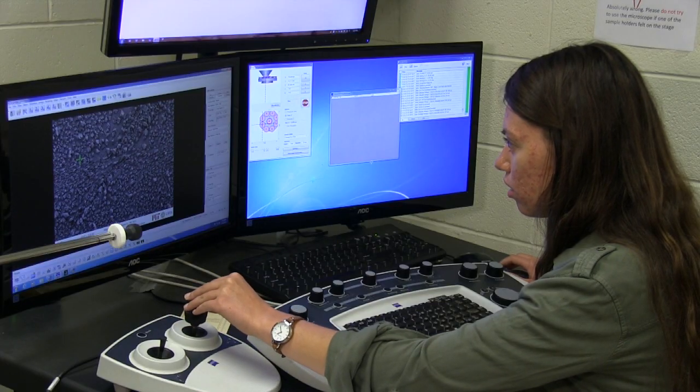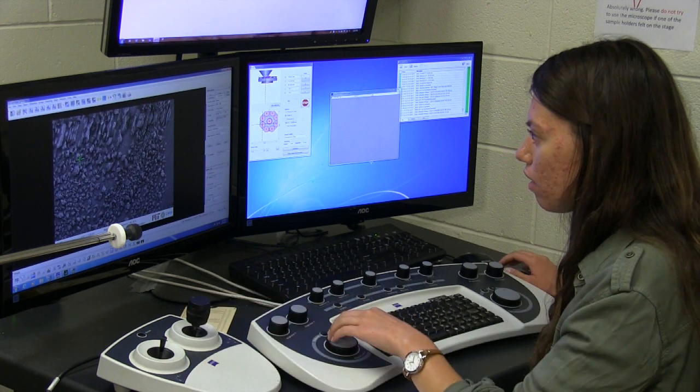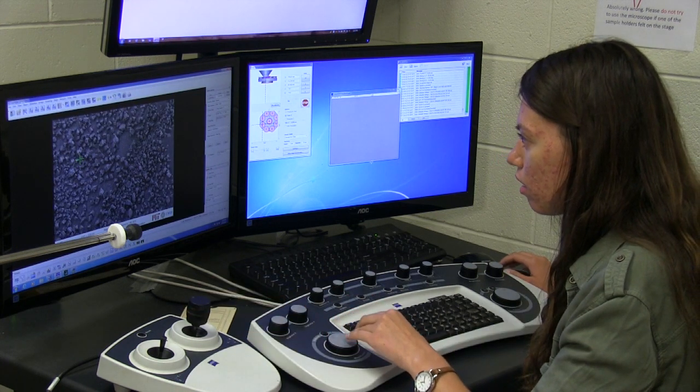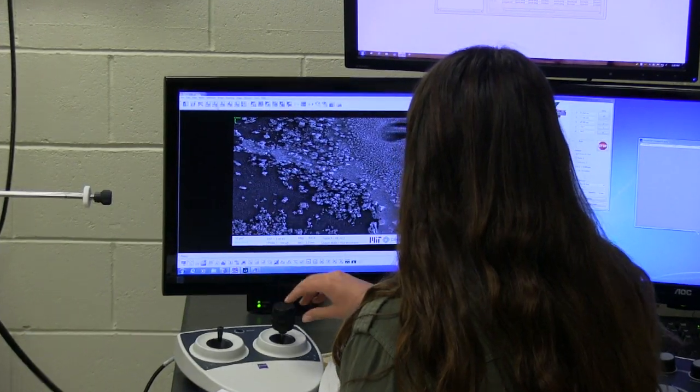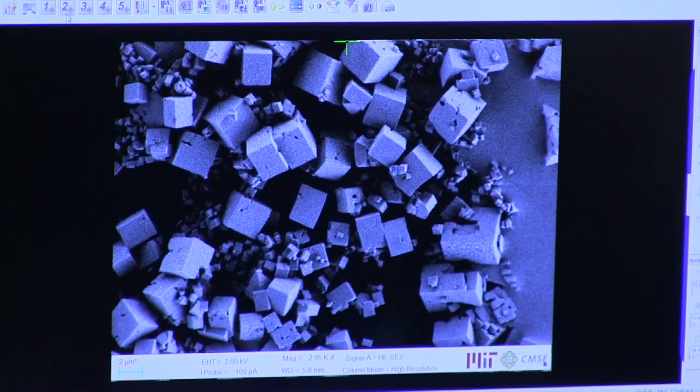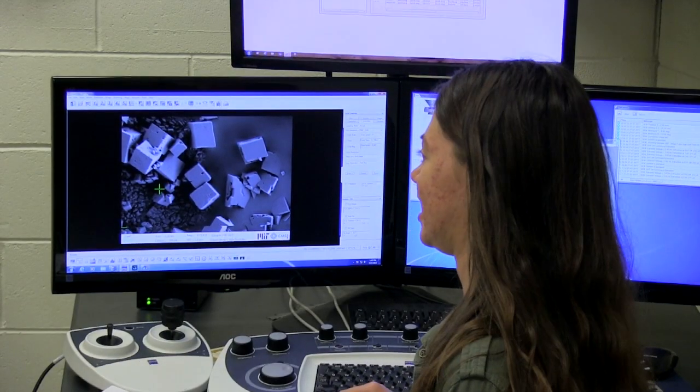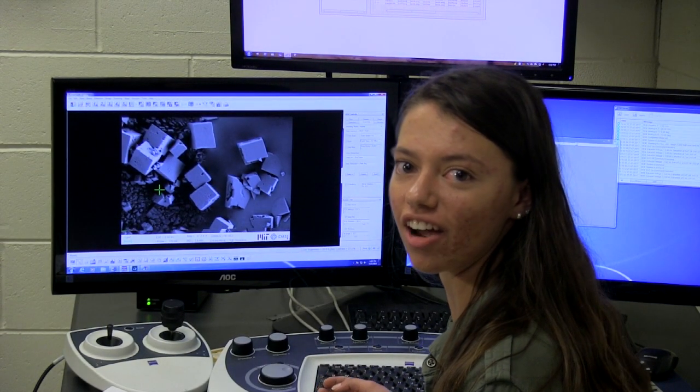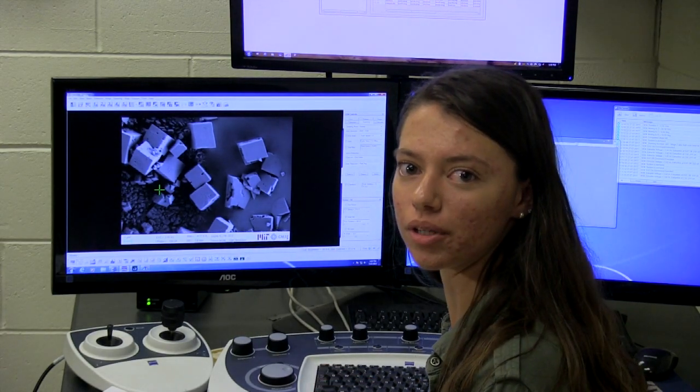Right now, I am analyzing some SEM images of the microplates. These ones are formamidinium lead-bromide perovskites. And basically, they form these little plates that are about one to three microns in one dimension. So, I'm looking at the microplates to see the different sizes that they are and looking to see if there are any defects or impurities.